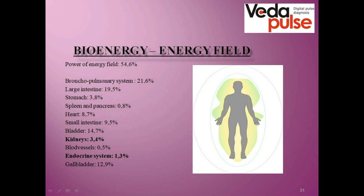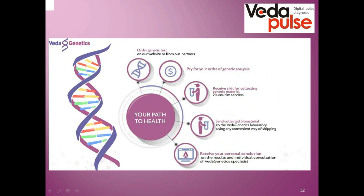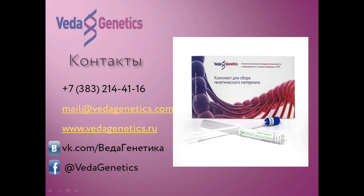Once again, there are no clear factors directly showing such a condition — we can only judge by indirect markers. Also, the Pulse company provides genetic analysis that can help find predispositions to a number of different disorders. It is done by sending biomaterial in a polymer tube to the lab. After the test is done, a company expert gives conclusions and recommendations on lifestyle, diet, physical activity, supplements, and more via a Skype session. Please email us if you have any questions. Thank you for your attention and see you next time.